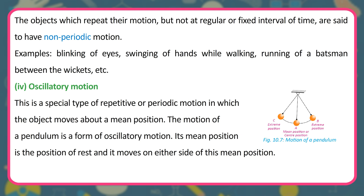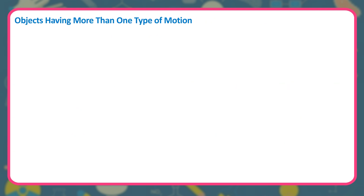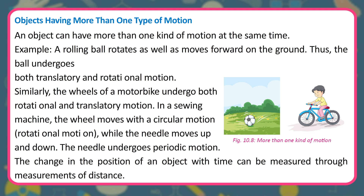Oscillatory motion is a special type of repetitive or periodic motion in which the object moves about a mean position. The motion of a pendulum is a form of oscillatory motion. Its mean position is the position of rest and it moves on either side of this mean position. An object can have more than one kind of motion at the same time. A rolling ball rotates as well as moves forward on the ground; thus, the ball undergoes both translatory and rotational motion. In a sewing machine, the wheel moves with rotational motion while the needle moves up and down, undergoing periodic motion. The change in position of an object with time can be measured through measurements of distance.